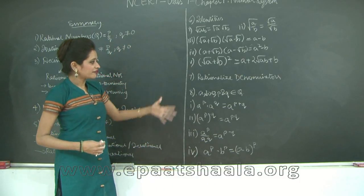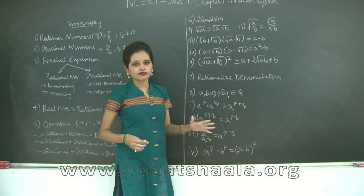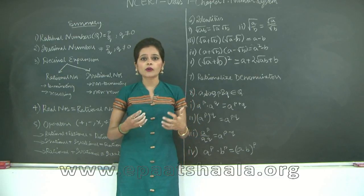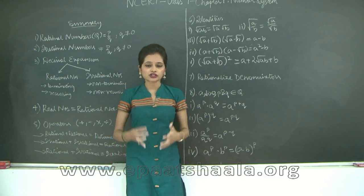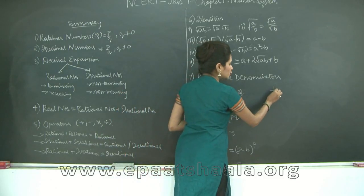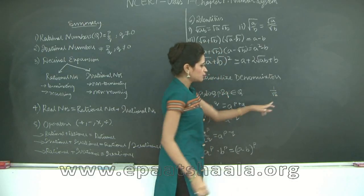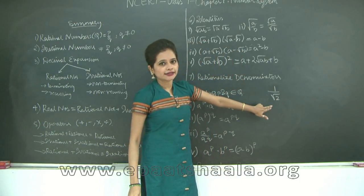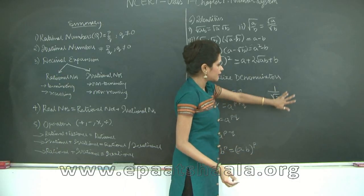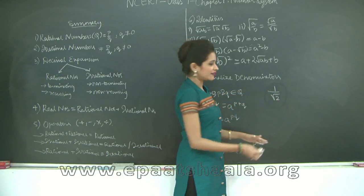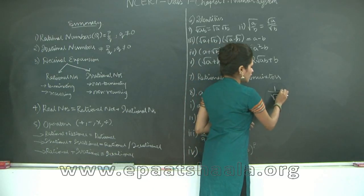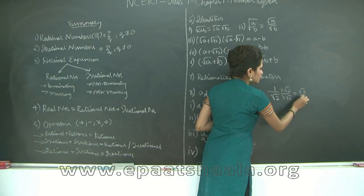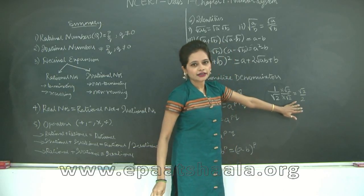This section covers rationalizing of denominators. Rationalizing means your denominator is irrational and you want to make it rational by multiplying by its rationalizing factor. For example, 1 upon √2: the denominator is irrational, so multiply and divide by √2, giving √2 upon 2. Now the denominator 2 is rational.